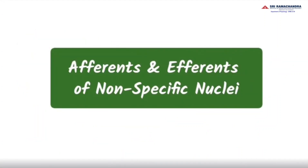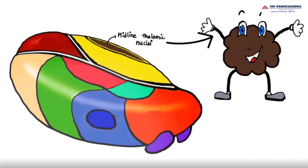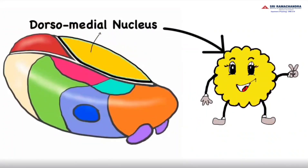Afferents and efferents of non-specific nuclei: the anterior group of nuclei receive afferents from the mammothalamic tract and give efferents to the cingulate gyrus. The midline group receives afferents from all ascending fibers, the hypothalamus, and reticular formation, and gives efferents to the neocortex, basal ganglia, and hypothalamus. The intralaminar nucleus receives afferents from the reticular activating system and basal ganglia, and gives efferents to the neocortex and prefrontal cortex. The dorsomedial nucleus receives afferents from the hypothalamus and prefrontal cortex, and gives efferents to the prefrontal cortex.